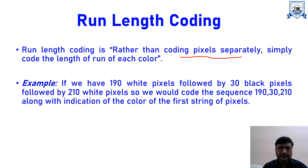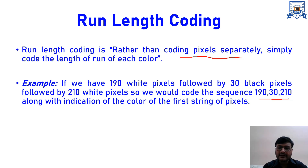For example, suppose we have 190 white pixels followed by 30 black pixels and then 210 white pixels. Rather than encoding all the pixels individually, we will code the sequence 190, 30, 210 along with the indication of the starting color. We know that 190 refers to white pixels, so we encode the value 190 along with the color value, then encode 30 along with its color value, and so on. This is how we reduce the overall data requirement for representing the image, and this kind of representation is known as run-length coding, which is a part of facsimile encoding.